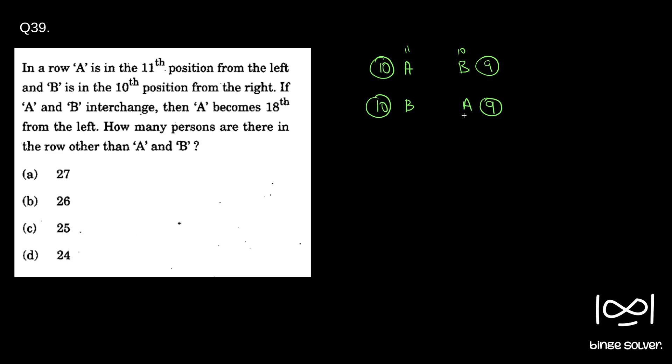Then A becomes 18th, so A is 18th. That means there are 17 people behind A now. So there are already 10 people behind B, then B is 11, so there has to be 6 people to have 17 people.